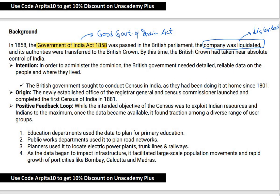After this Act was passed, the British Government started realizing that India has a vast and diverse population — different eras, cultures, and traditions. That is why it was very important to conduct a population count so that they could administer India better. To administer better, they started population counting. That is why in 1872, right after giving it much thought, the exercise of census was announced, and in 1881, India got its first census. The newly established Office of Registrar General and Census Commissioner launched and completed the first census of India in 1881.